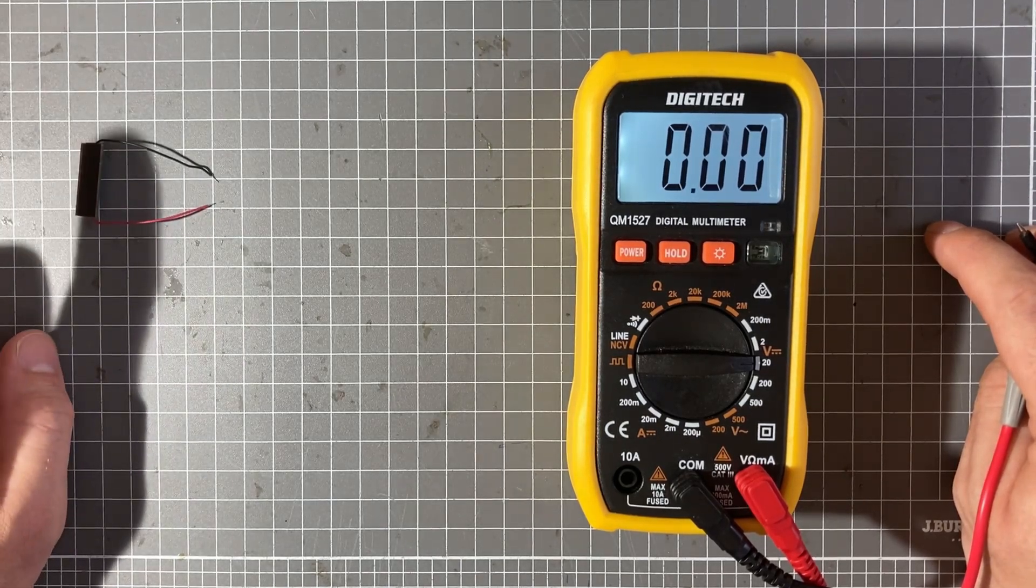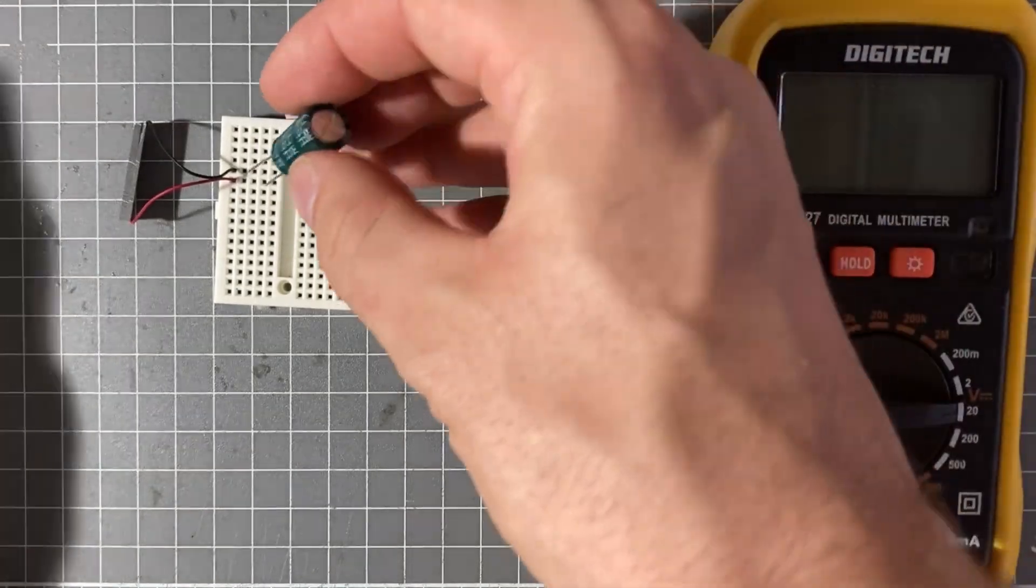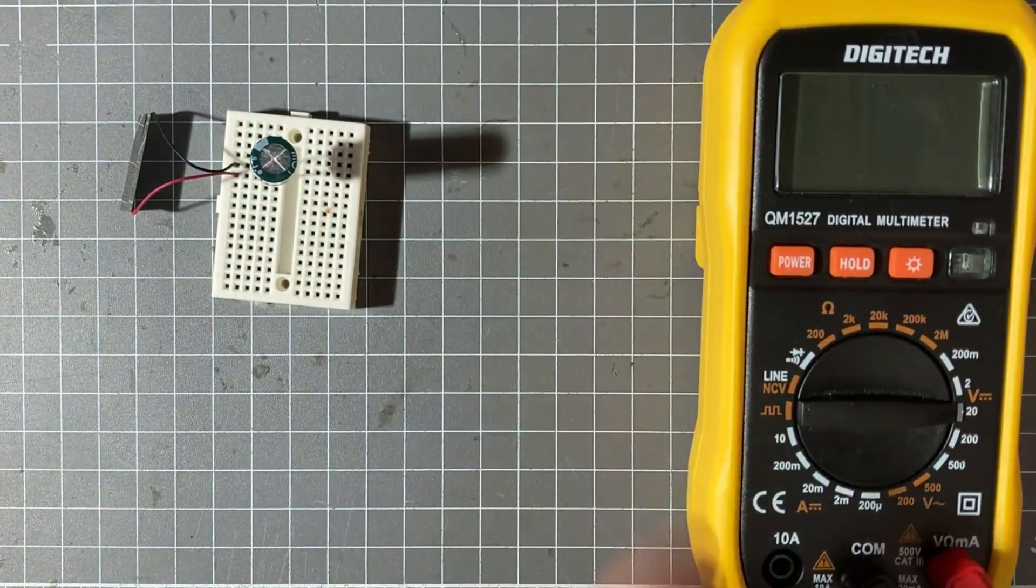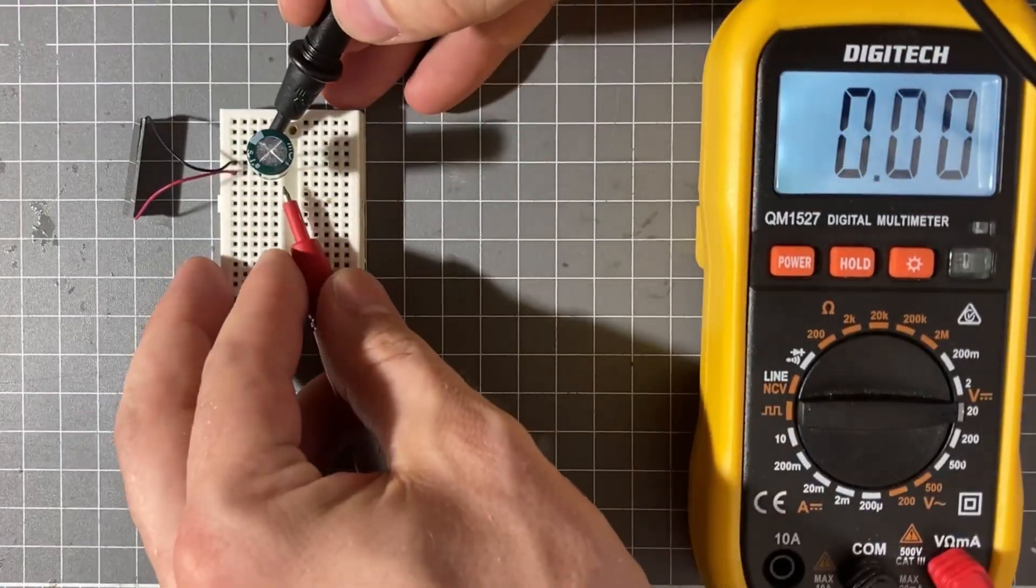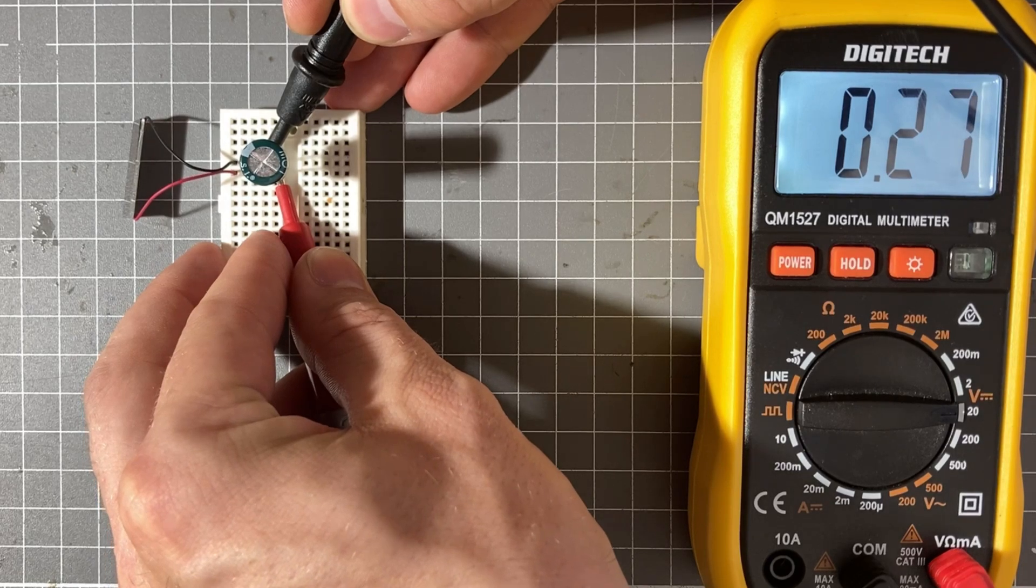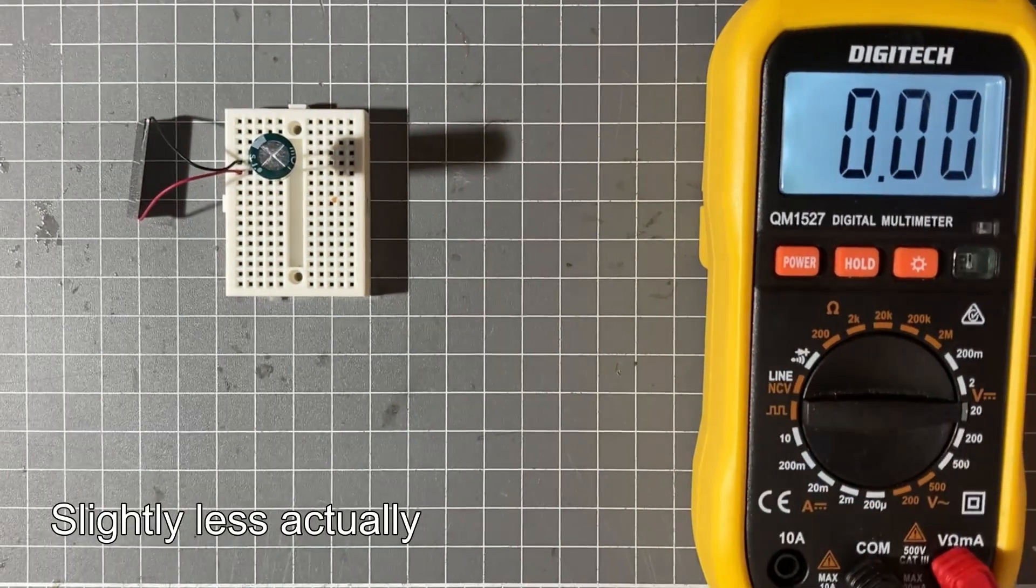Luckily there's a pretty easy way to do that. If we take a little capacitor like this and we connect it to our solar cell it will charge up. And we can see we connect our multimeter here we can watch the voltage slowly climbing and this will get up to whatever voltage our solar cell is rated for.